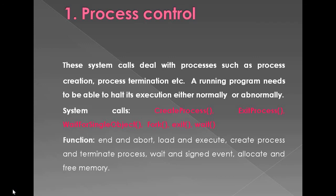The main functions of process control system calls are: end or abort a process, load and execute, create process and terminate process, wait and signal event, and allocate and free memory.